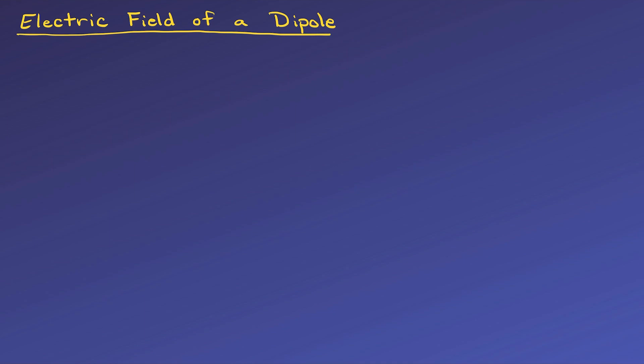Since we treat a dipole as a single object, or as a whole, the net charge of a dipole will be zero. Dipoles can be created or induced by moving charge around, but there also exist permanent dipoles, such as water molecules.